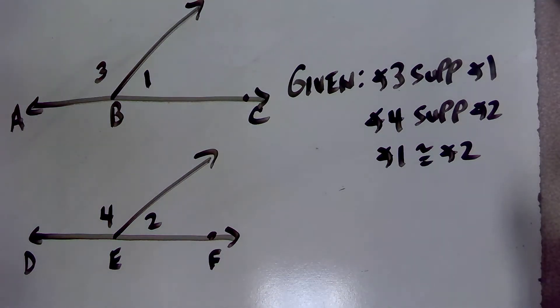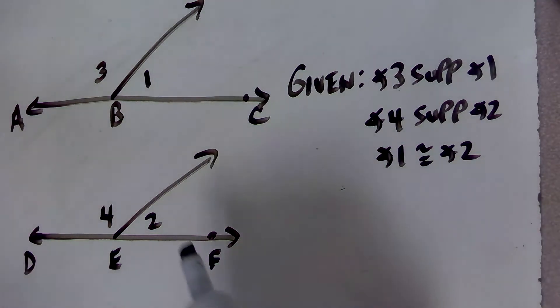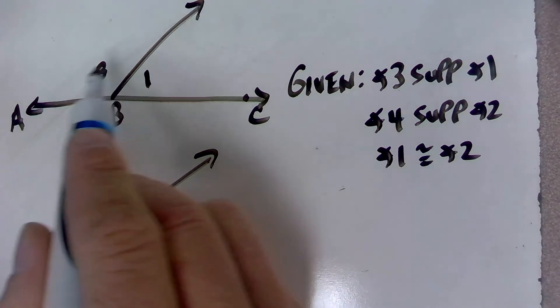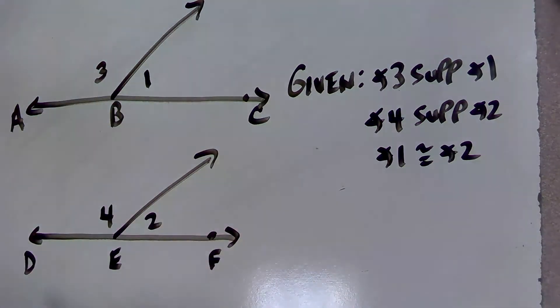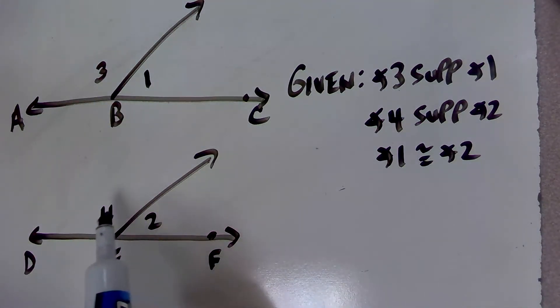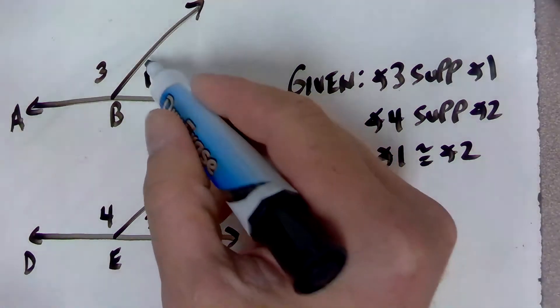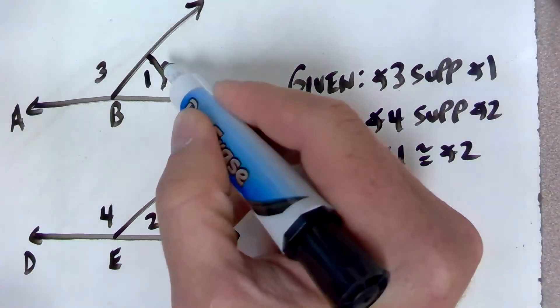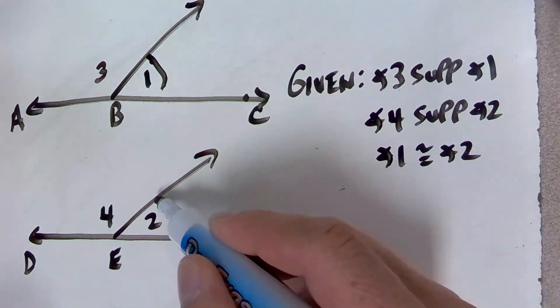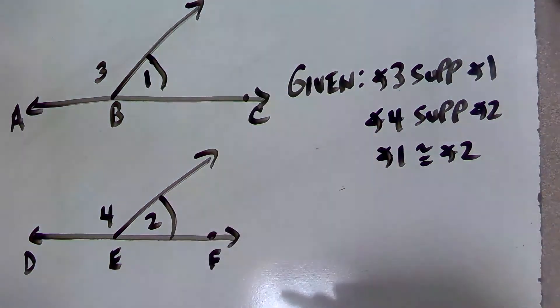In this picture, they're giving us that angle 1 and angle 3 are supplementary. Angle 2 is supplementary to angle 4. And they're also telling us that angle 1 is congruent to angle 2.